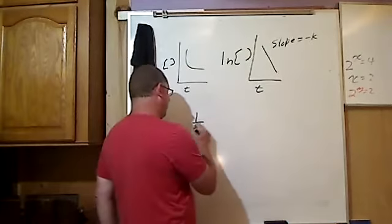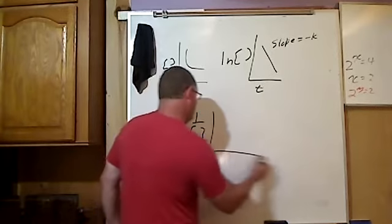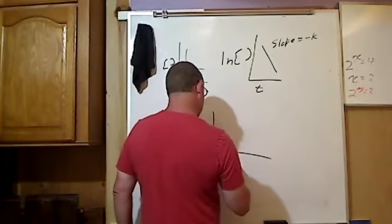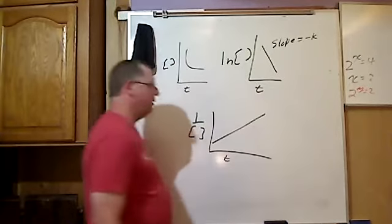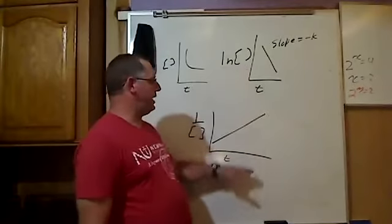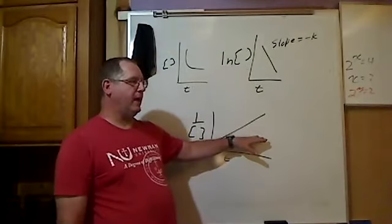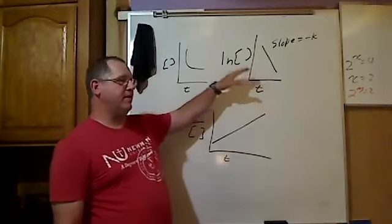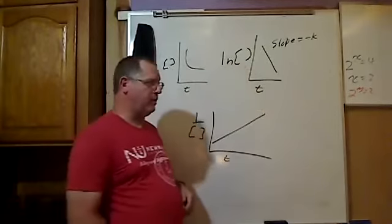If it's second order, it's going to be a straight line. So, zero first, second order. In this case, slope is equal to k. In this case, slope is equal to negative k. In this case, the slope would be equal to negative k.